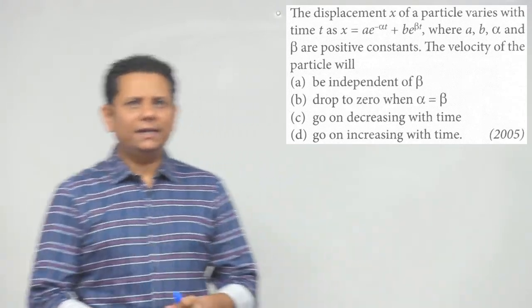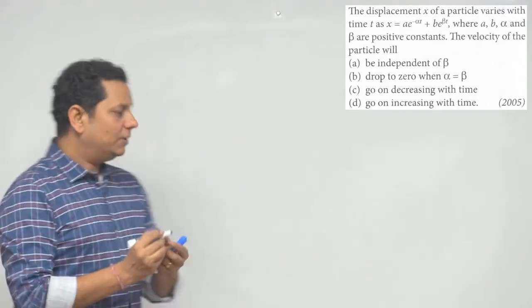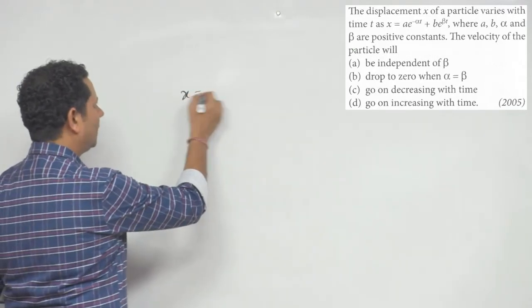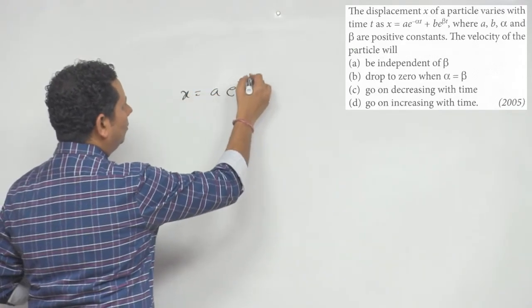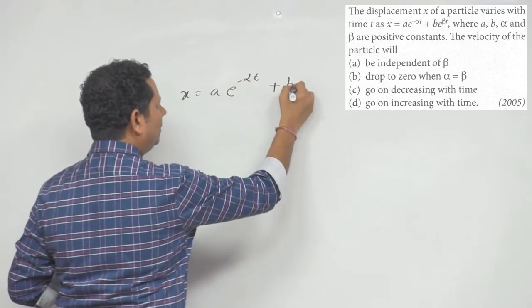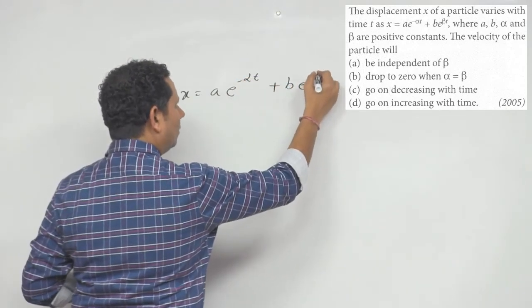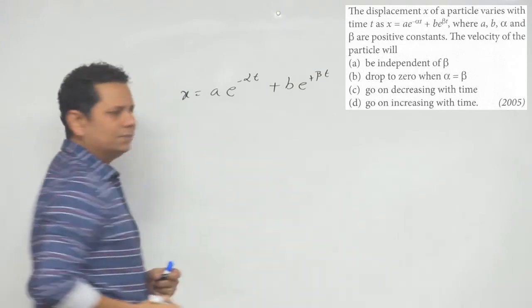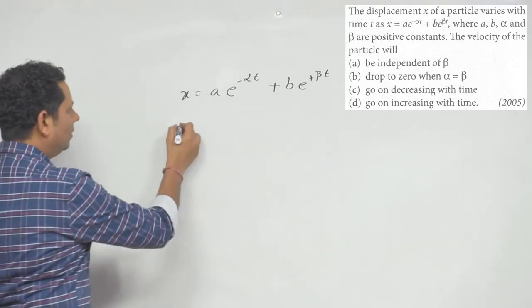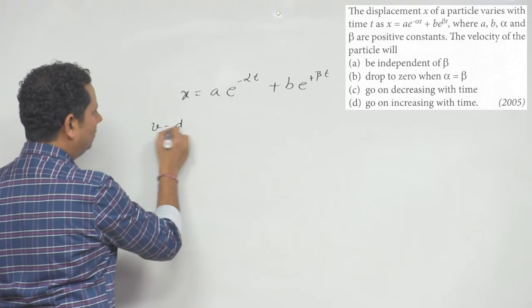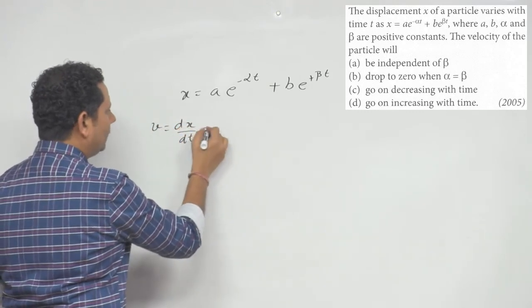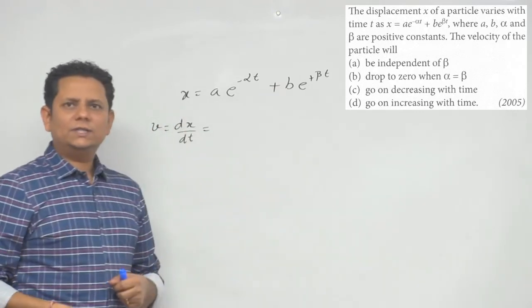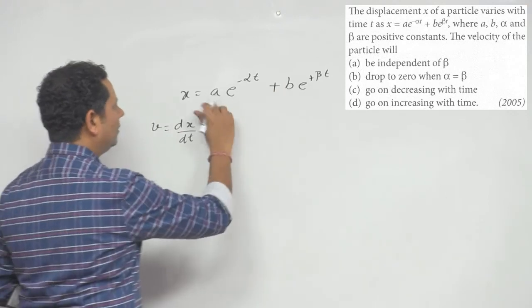Again, basics पर जाएगा, सवाल मुश्किल कुछ भी नहीं है। The displacement is given as x is equal to a e to the power minus alpha t plus b e to the power plus beta t. यह आपका displacement है। हमें करना है velocity के बारे में, तो velocity will be equal to dx by dt. इसको differentiate कर देंगे तो velocity का component आ जाएगा।